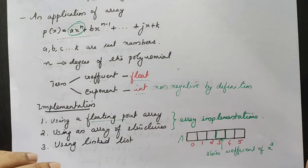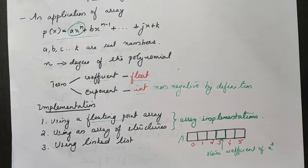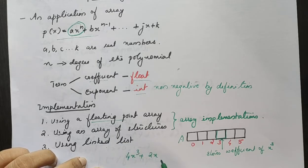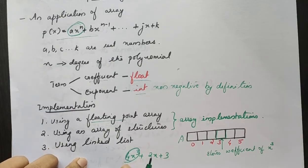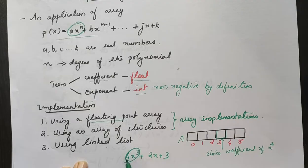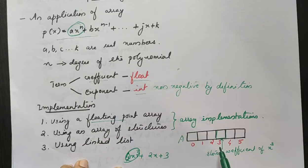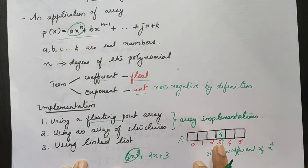We try to represent a polynomial using a floating point array and array of structures. For example, the polynomial 4x³ plus 2x plus 3. Each term has a coefficient and an exponent. The coefficient is stored and the exponents are represented by the index position in the array.